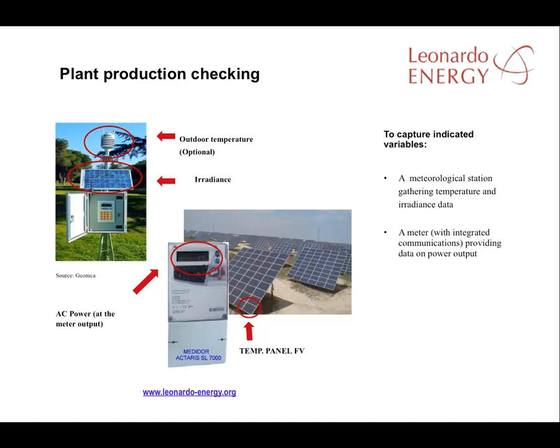In this slide you can see the main elements in the plant production check. On the left is a meteorological station providing temperature and irradiance data. The meter will provide you with a measure of the energy injected into the grid. The question is: is the plant producing power within its optimum range?